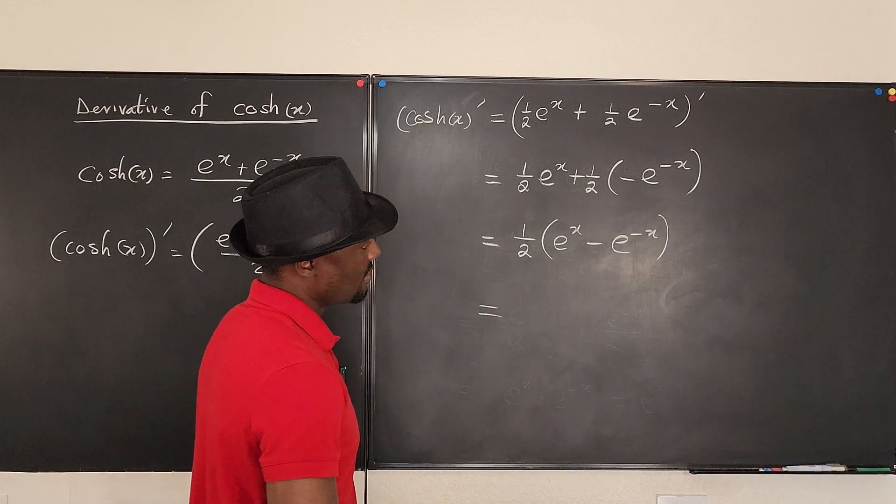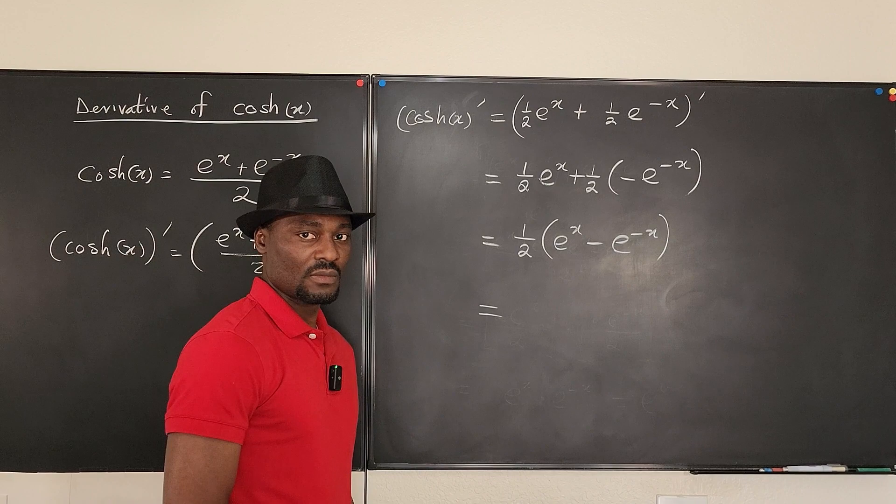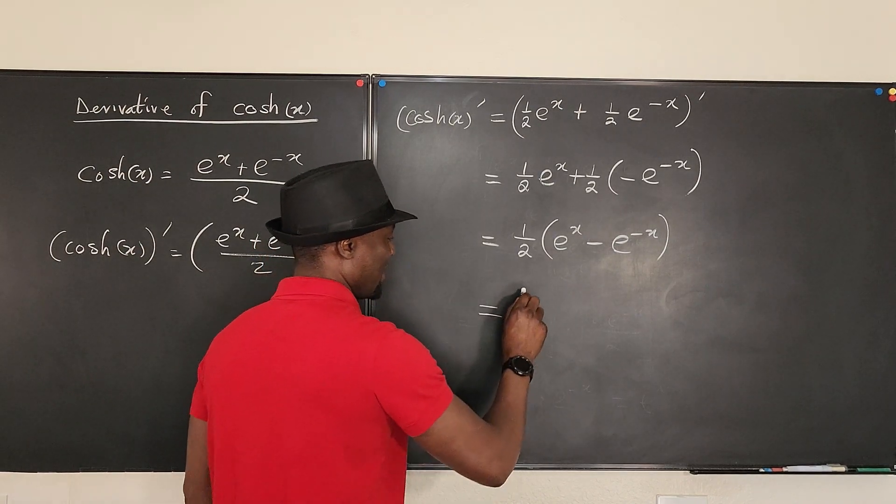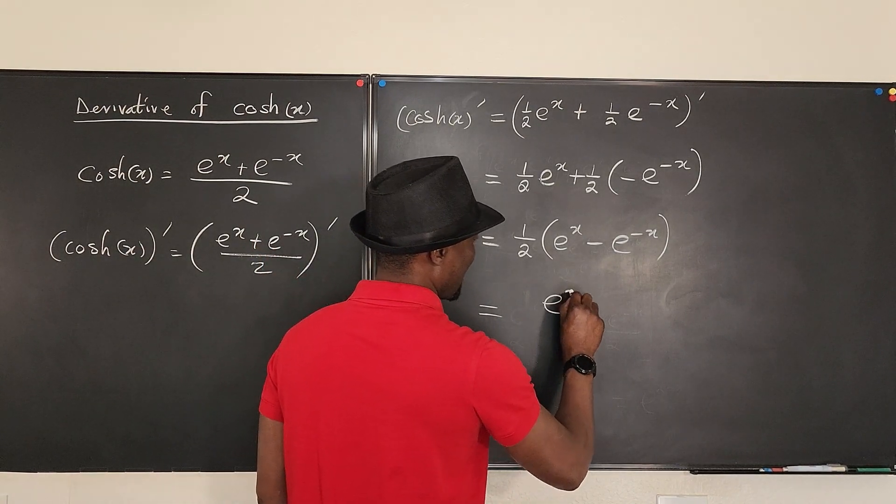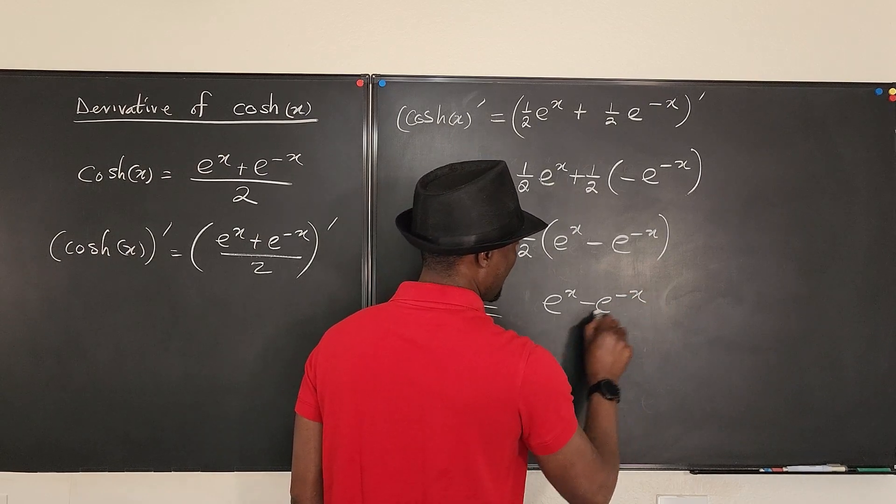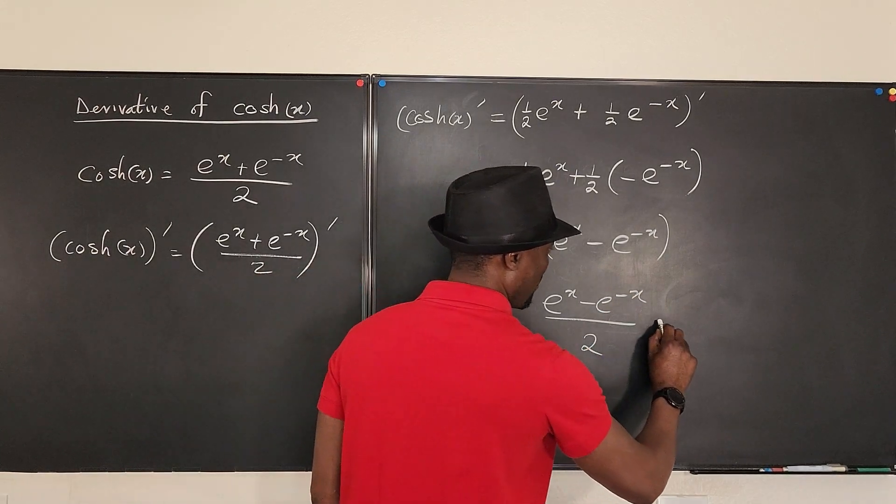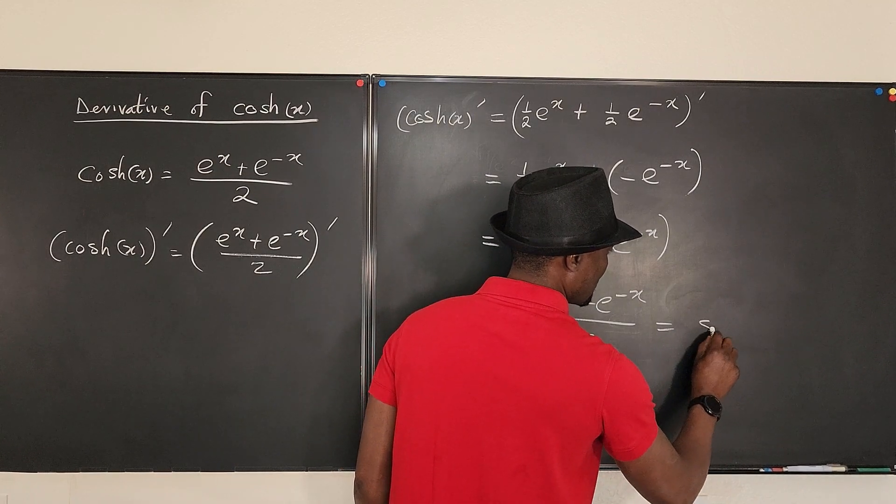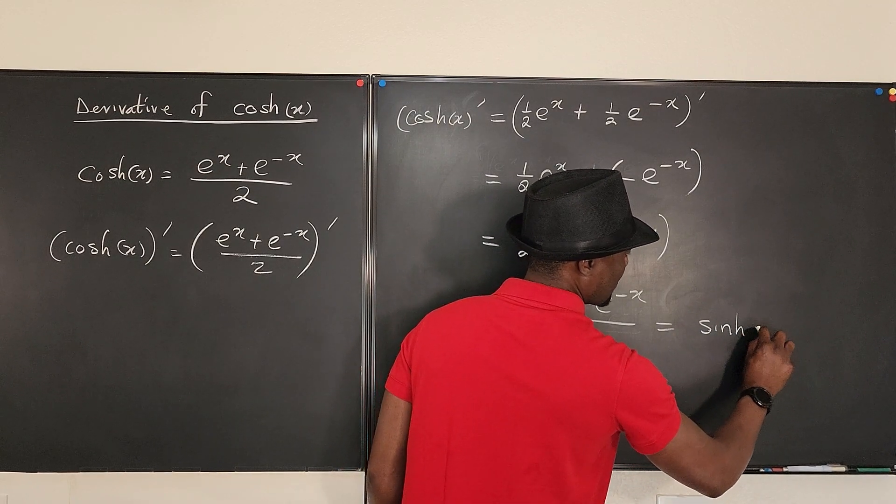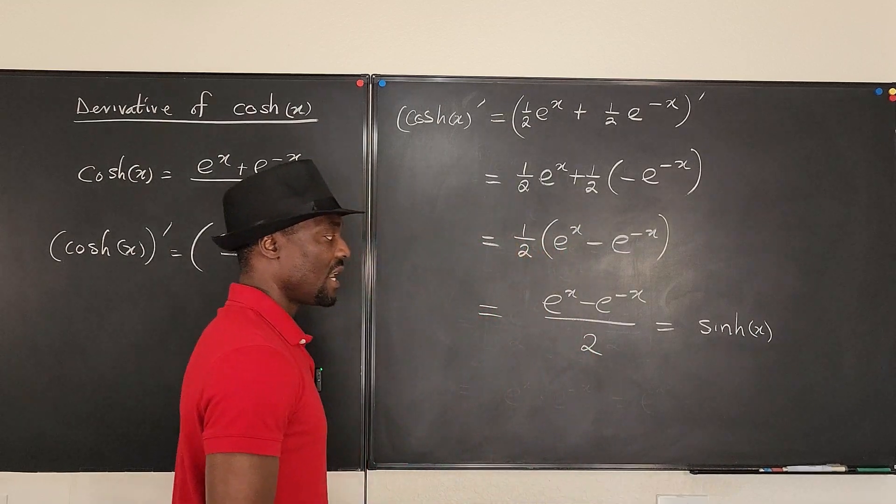And ladies and gentlemen, this is what we call sinh x. So that's going to be e^x minus e^(-x) over 2, and this actually is equal to hyperbolic sine x.